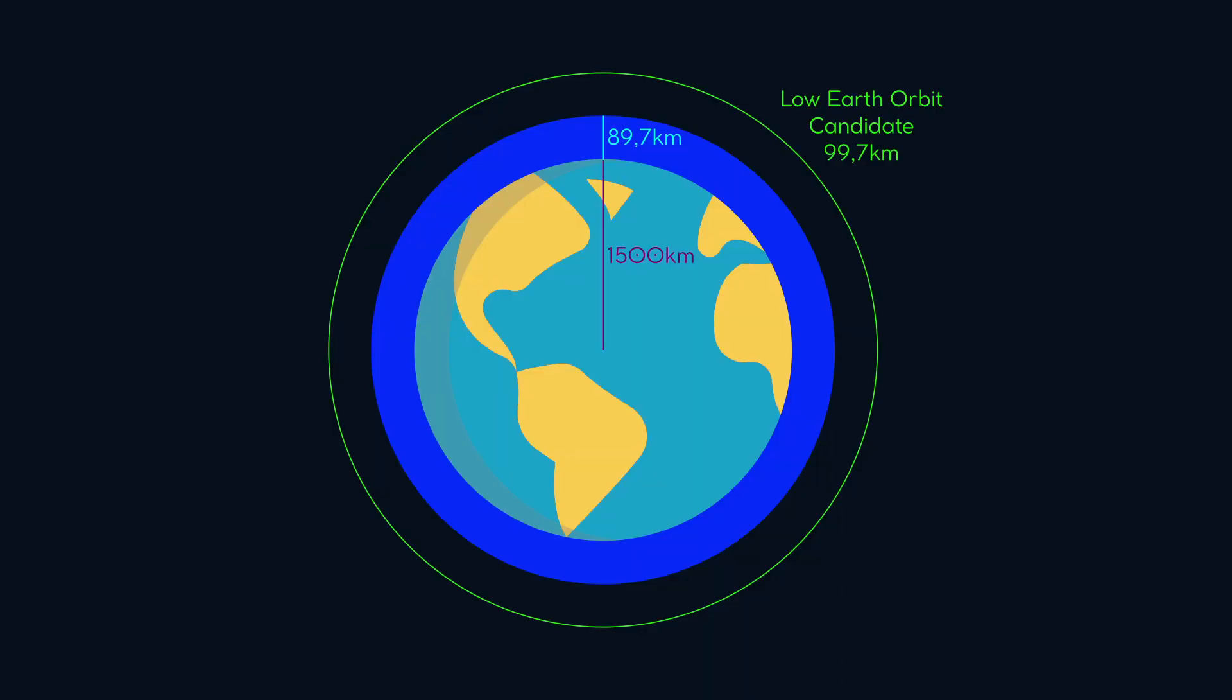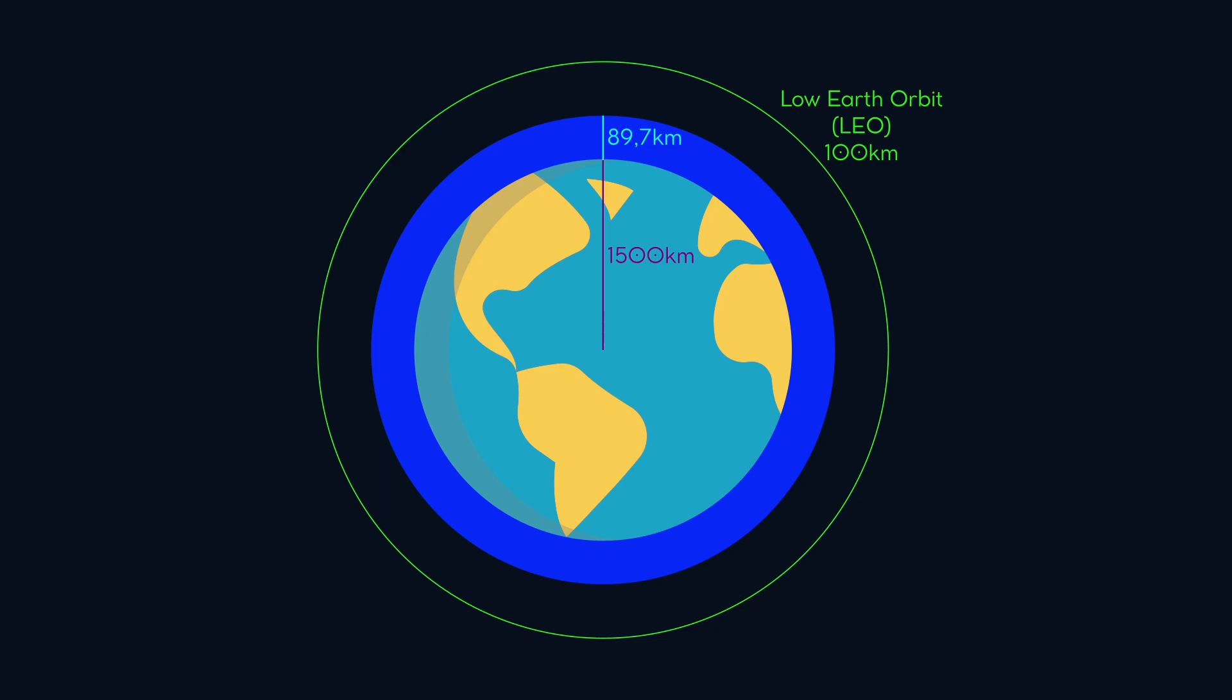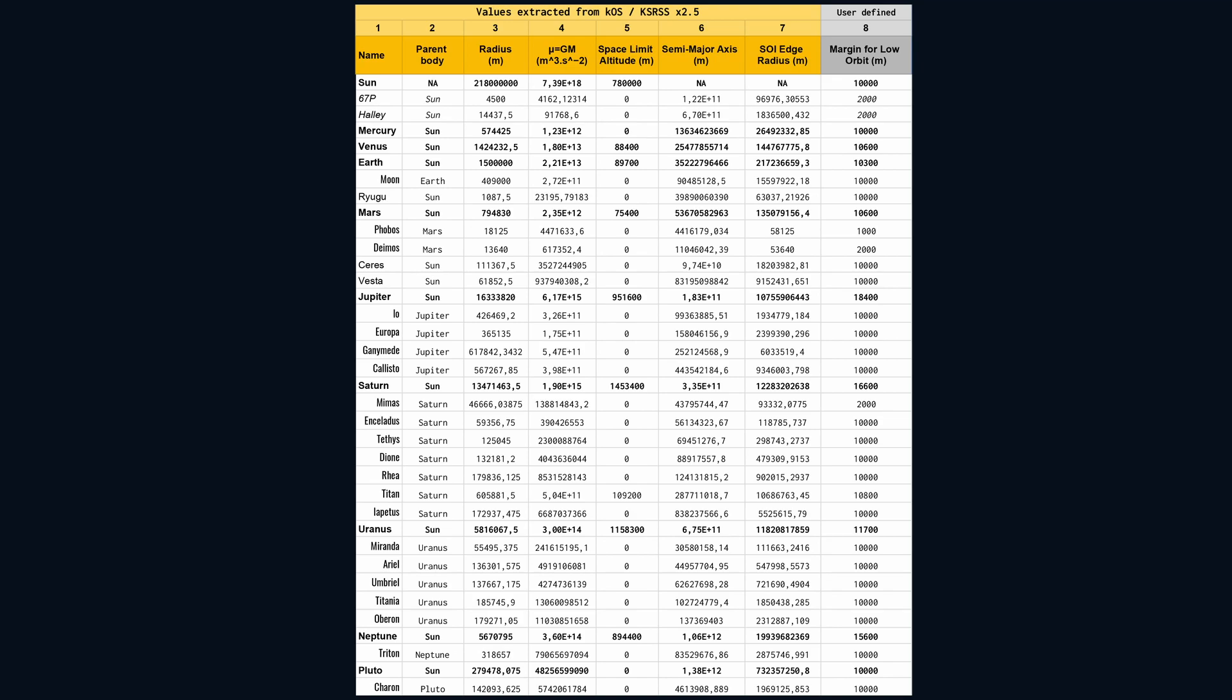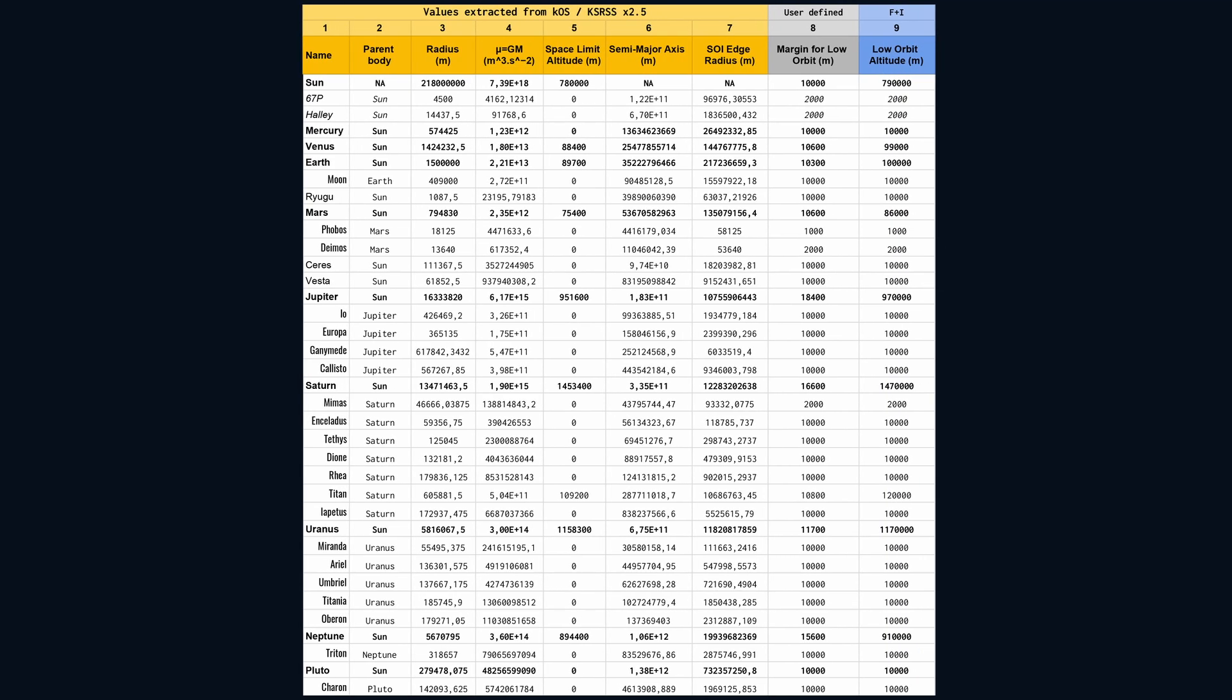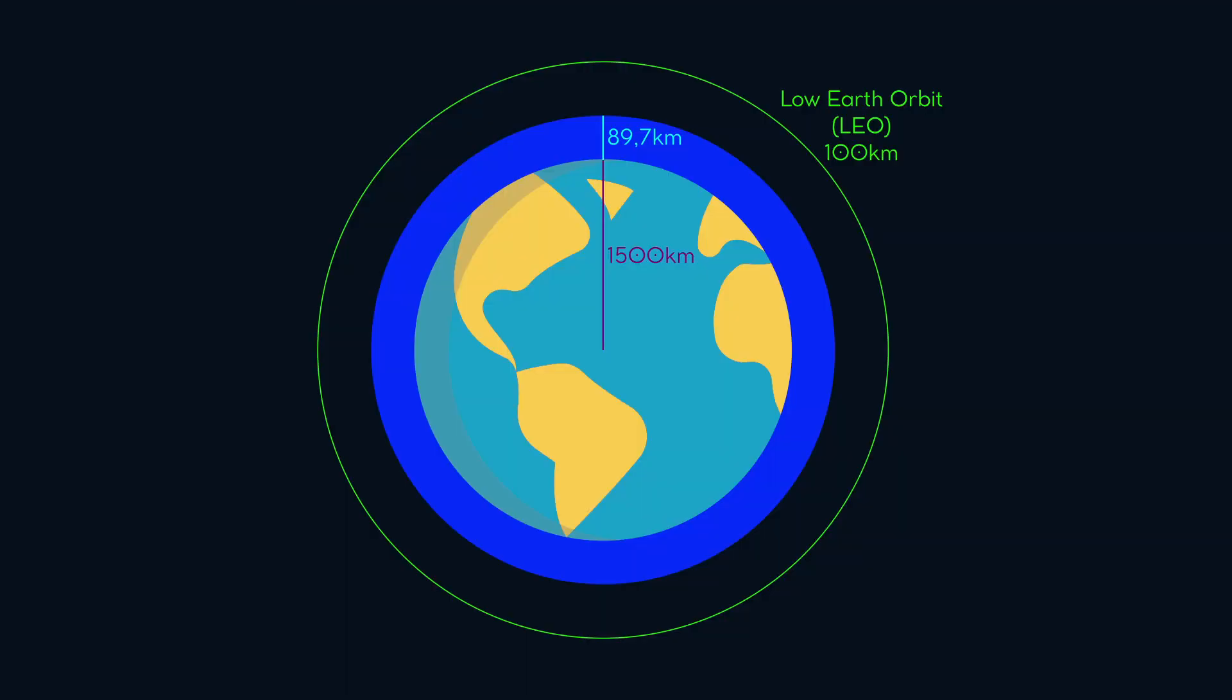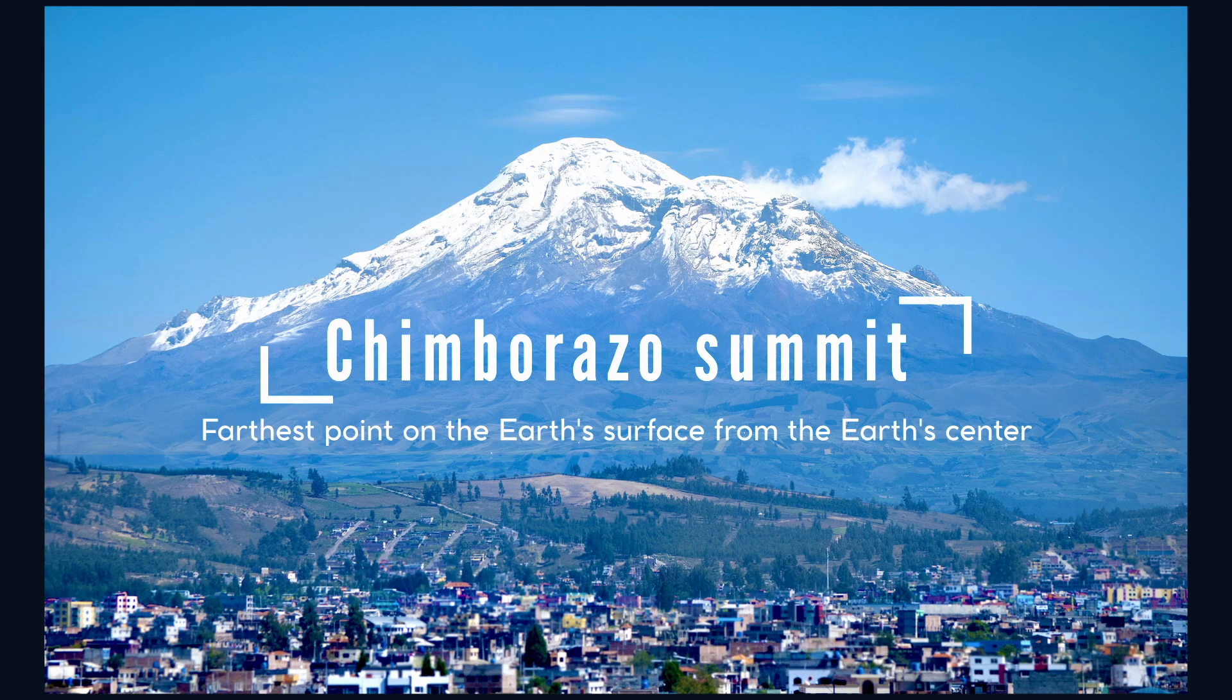For the Earth, we obviously round up to 100 kilometers. It's practical, intuitive and easy to memorize. I'll do the same exercise for the other bodies by decreasing the altitude for those which are very small. This remains quite theoretical because I do not know the altitude of their highest reliefs. It nevertheless allows us to move forward.